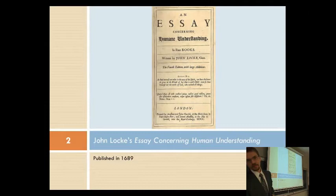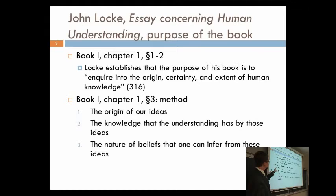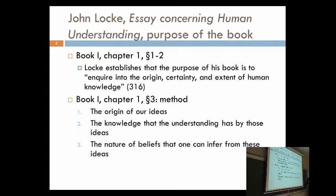So, in Book 1, Chapter 1, in sections one and two, Locke tells us what he's up to in this essay — that the goal of it is to inquire into the origin, the certainty, and the extent of human knowledge. This is roughly the structure of what he's trying to do in the whole book. First, he wants to talk about where do we get our ideas from. Secondly, he wants to understand the knowledge that the understanding has by those ideas. And third, the nature of beliefs that one can infer from these ideas.